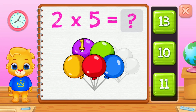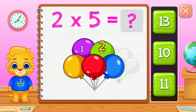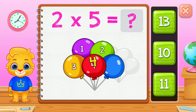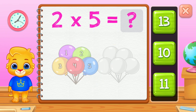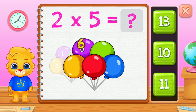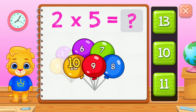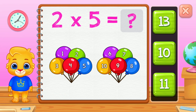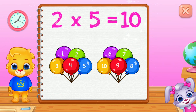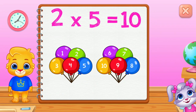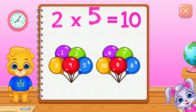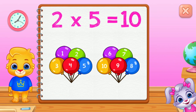One, two, three, four, five, six, seven, eight, nine, ten. Two groups of five equals ten.